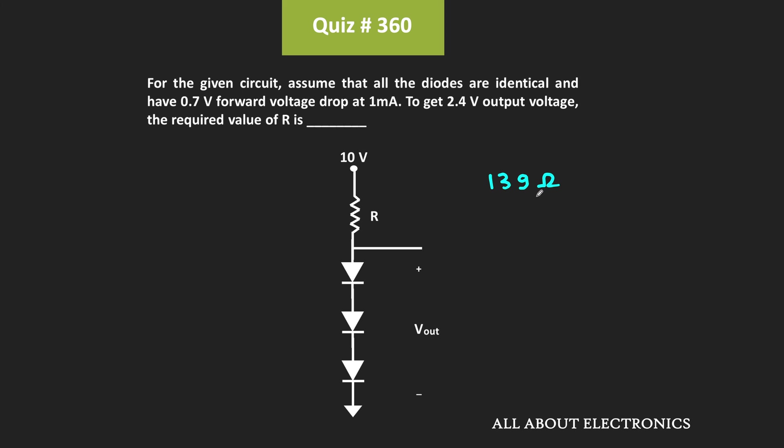And if you have considered the value of Vt as 26mV, then in that case the value of R will be around 162 Ohm.